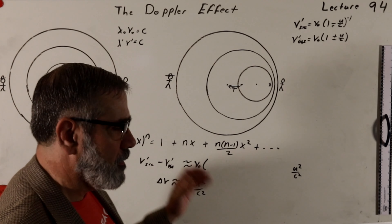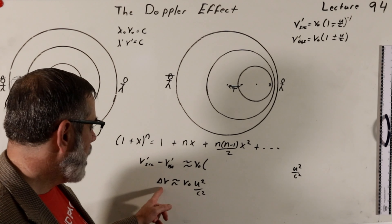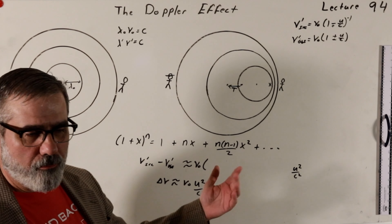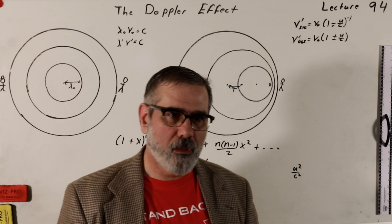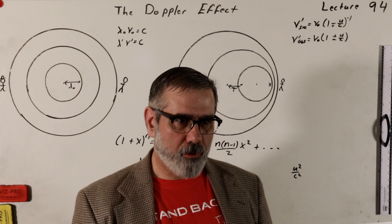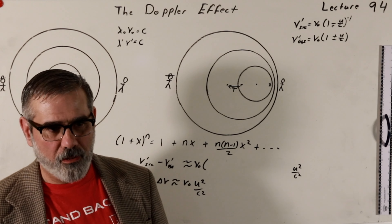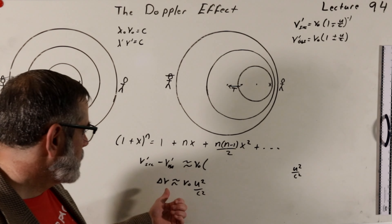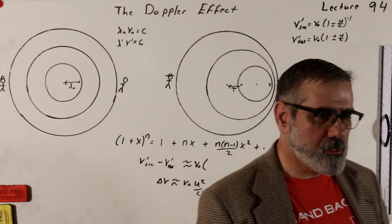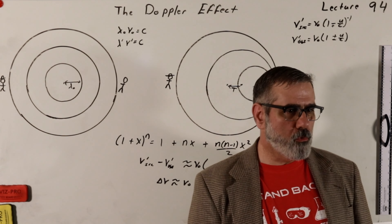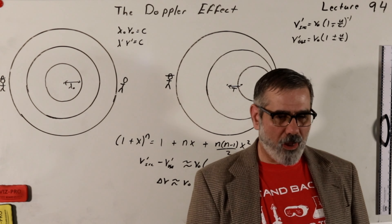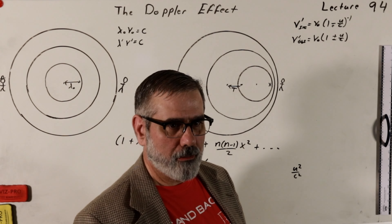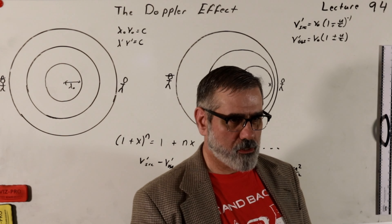If you can measure the frequency to better precision than this value — nu nought times u squared over c squared — then you can determine which one is moving and which one is not, giving you a way to find absolute motion. But if we're now talking about light waves, that's a problem: it violates the principle of relativity. There is only relative velocity, as Einstein showed. Applied to light waves, these formulas would allow you to discern who was moving and who was not, which contradicts relativity.